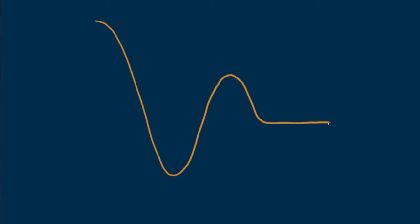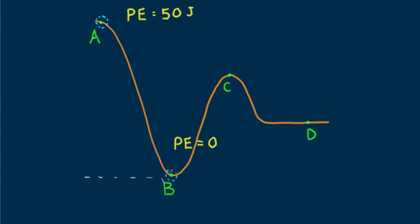Consider the potential energies and kinetic energies of a metal bead that slides due to gravity along an upright wire. At point A, the bead is at rest with a potential energy of 50 joules — that's 50 joules with respect to lowest point B below. At point B its potential energy is 0. At point C its potential energy is 25 joules, and at point D potential energy is 10 joules.